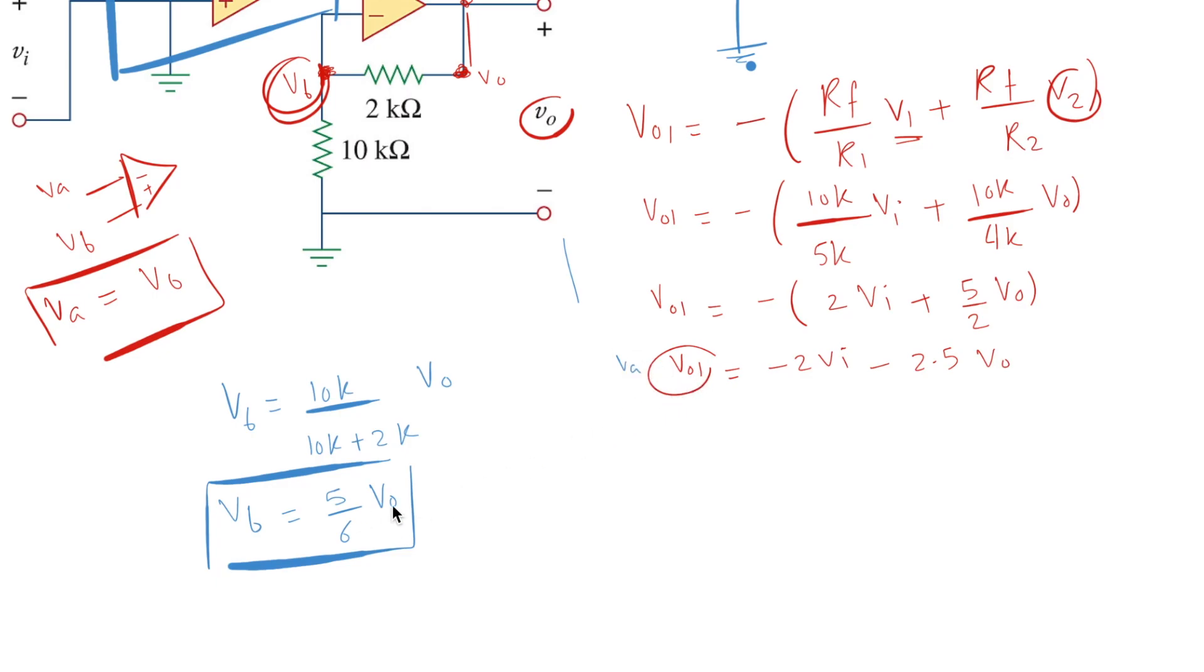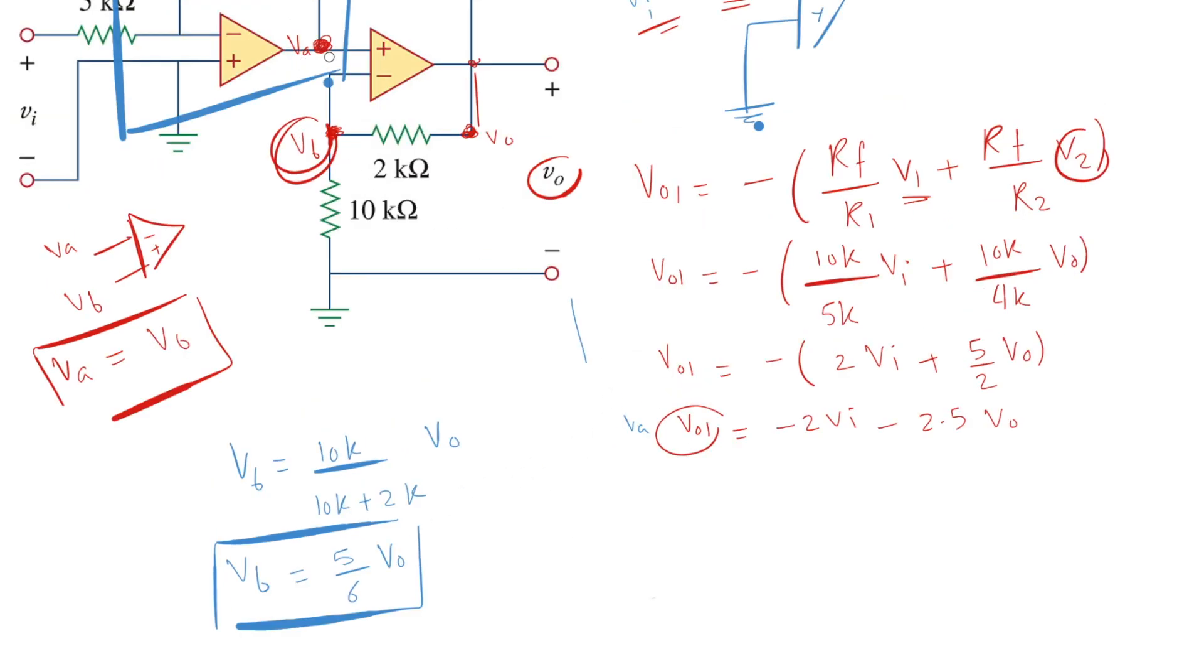So we have Vb and we say this is Va, right? Vout1, which is the output of this op amp. So the output of that op amp is found here: minus 2Vi minus 2.5 Vout is equal to Vb here, which is 5 over 6 Vout.